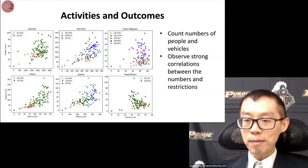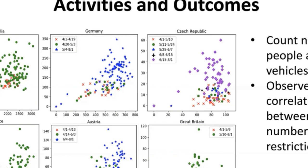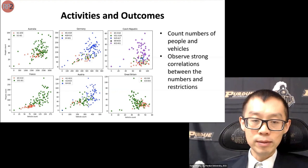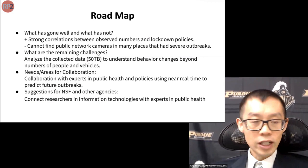Looking at the Czech Republic example, which had four stages of reopening: during the lockdown, the red dots are mostly in the lower left corner, meaning very few people or vehicles were observed on the street. As the country opened up, the green dots shift to the upper right, indicating more vehicles and people appearing. This shows a strong correlation between policies and the number of people and vehicles observed, suggesting this tool indicates people followed lockdown policies fairly well.